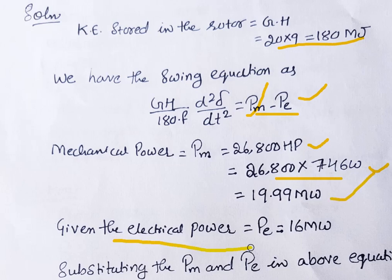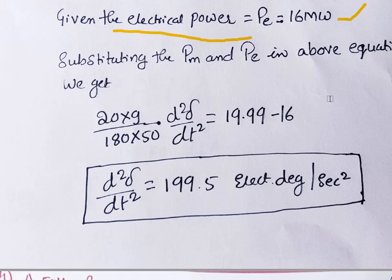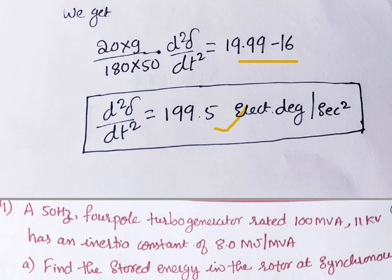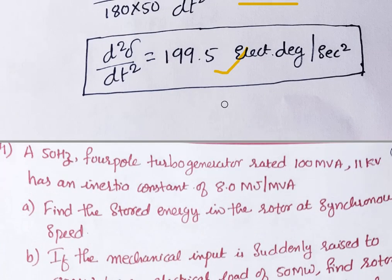Substituting P_M = 19.99 MW and P_E = 16 MW into the swing equation with G·H = 180 and f = 50 Hz, we solve for d²δ/dt² and get the acceleration = 199.5 electrical degrees per second squared. This is the final answer for problem three.